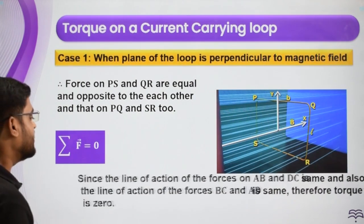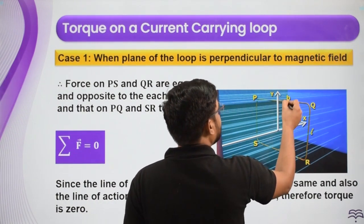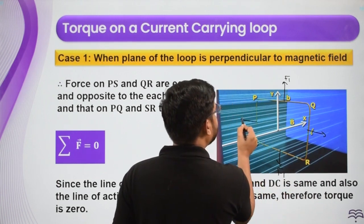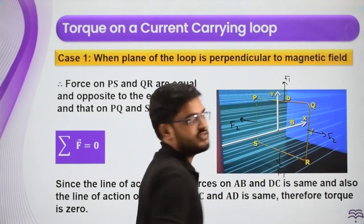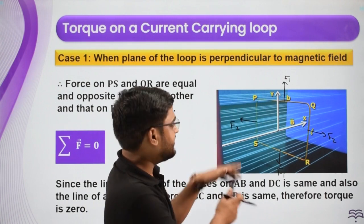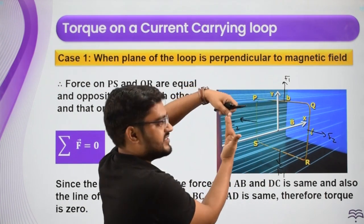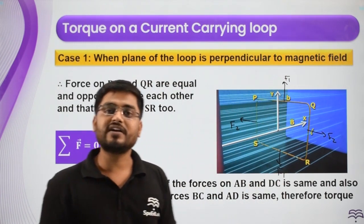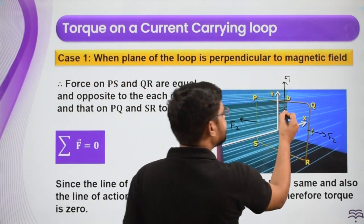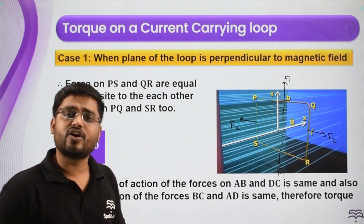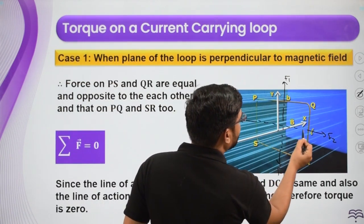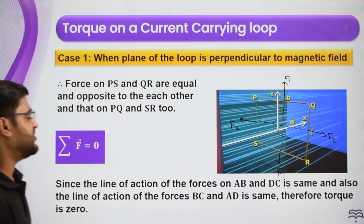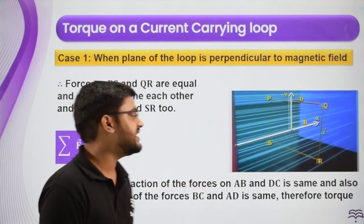Now what about the torque? When the plane is perpendicular to the field, there are equal and opposite forces F1 (upward and downward on PQ and SR) and equal and opposite forces F2 (on QR and PS). However, the forces F1 act along the same line of action, and similarly F2 act along the same line of action. Therefore neither pair produces any torque at all.